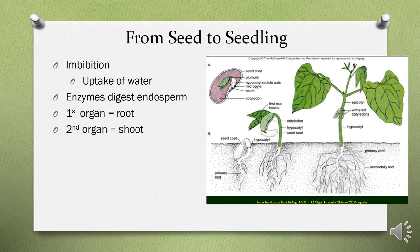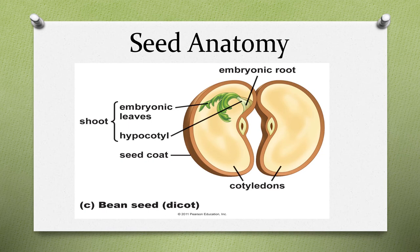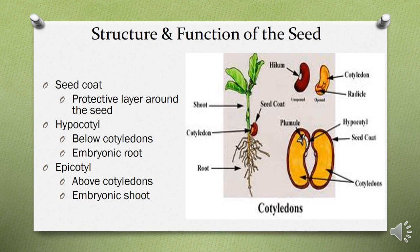This slide shows what happens after seed germination, or how the seed is converted into a seedling. First, imbibition takes place in which the seed absorbs enough water. Then enzymes in the endosperm are digested. The first organ to develop from the seed is the radicle, which is the first root. The second organ is the shoot, also known as the plumule. Different parts of the seed include the seed coat — a protective layer against environmental stresses — and the hypocotyl, the part of the plumule present below the cotyledons, which is the embryonic root.